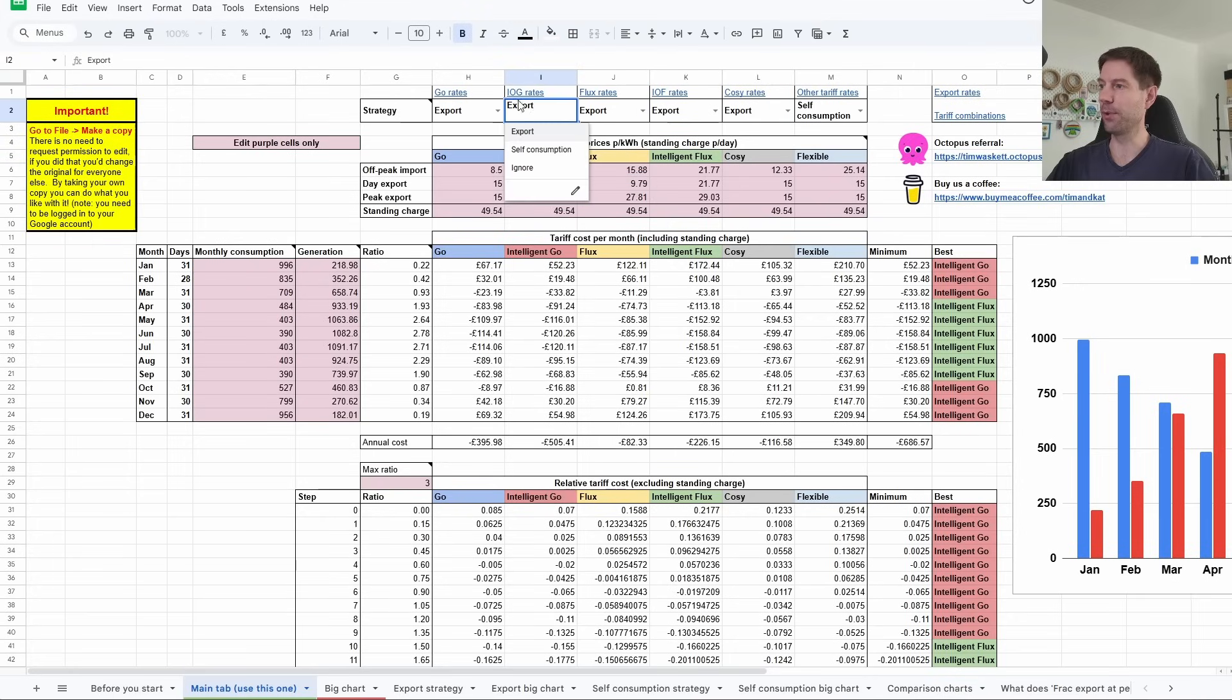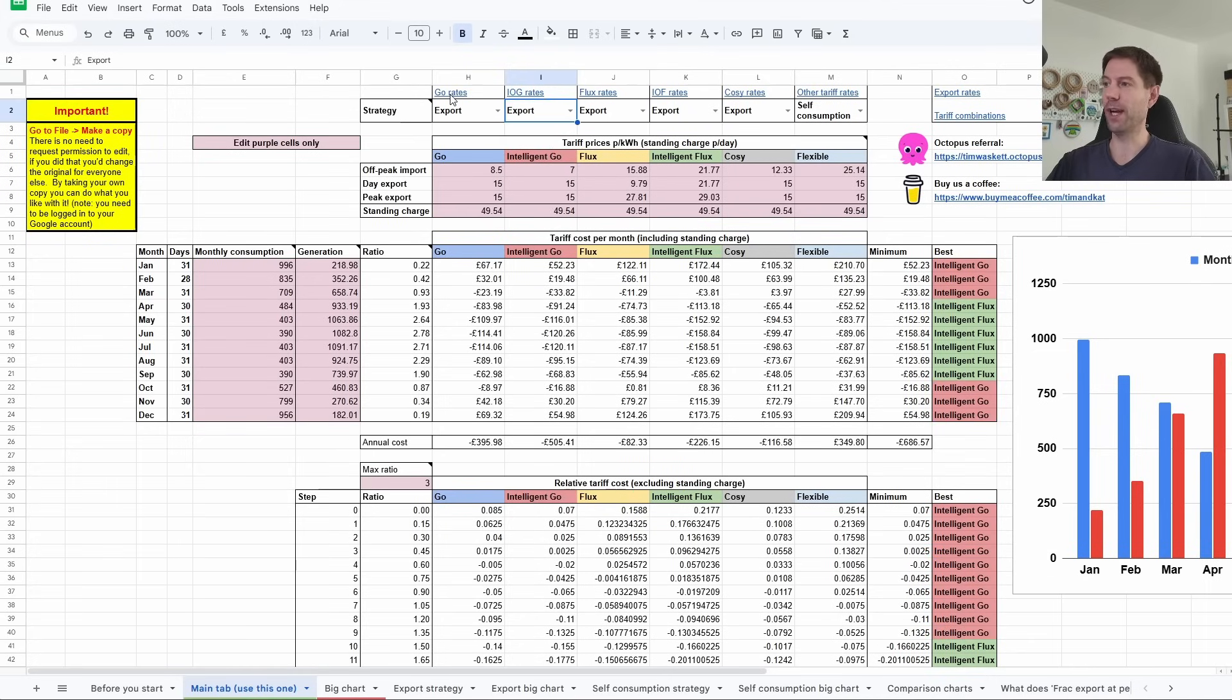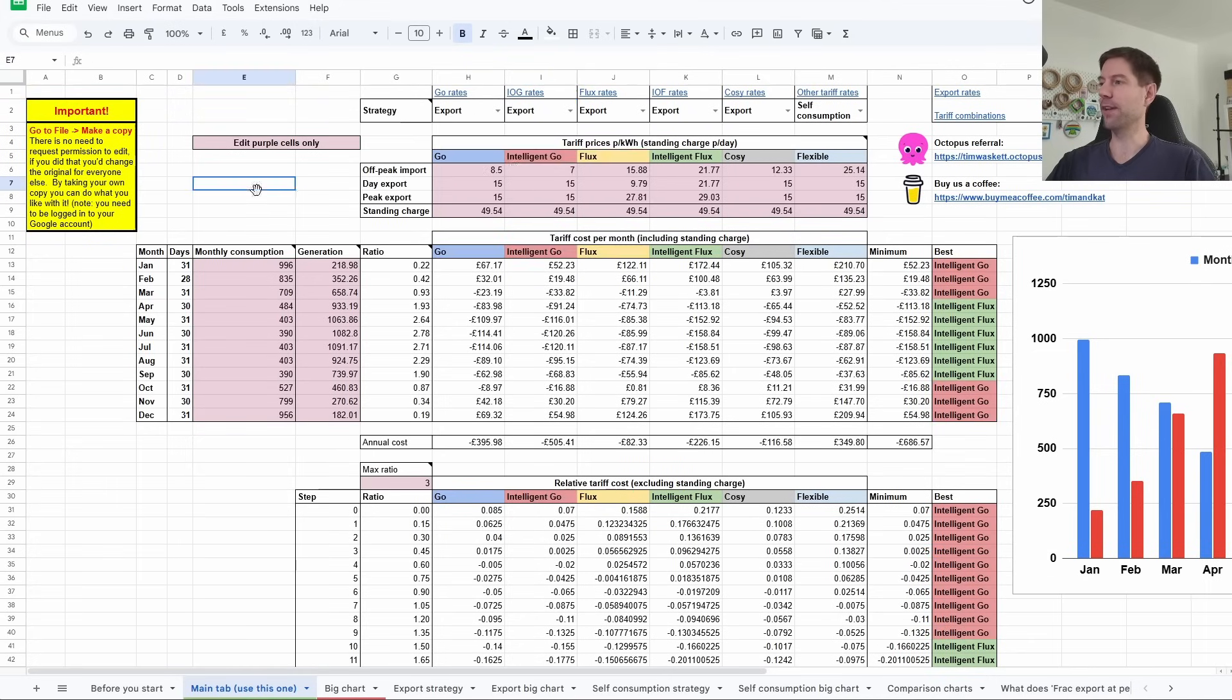You could, if you chose, change Intelligent Go to a self-consumption mode, but there's really no point in doing that. It's absolutely the best option to go for the export strategy with Intelligent Go and Go. For Flux and Intelligent Flux I've also left those as the export strategy because the self-consumption goes a bit weird for the Flux tariff.